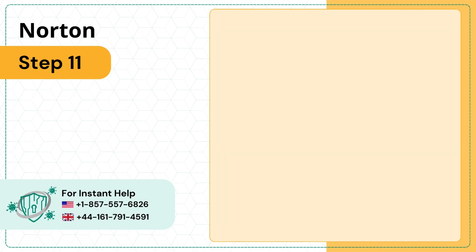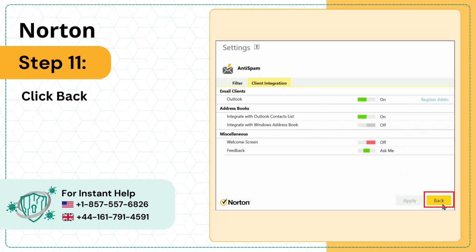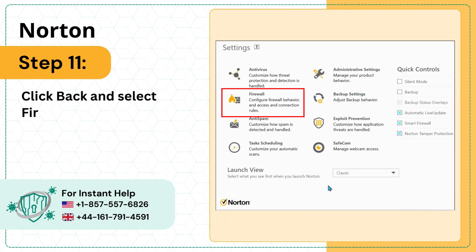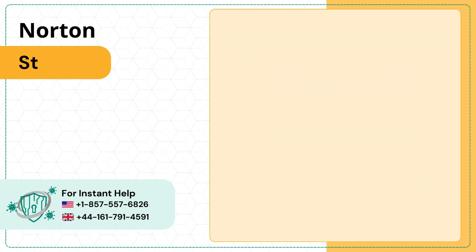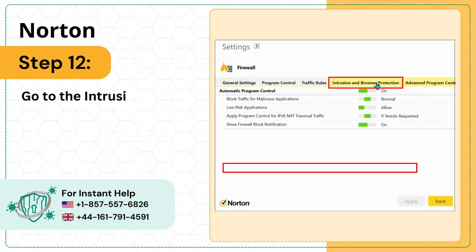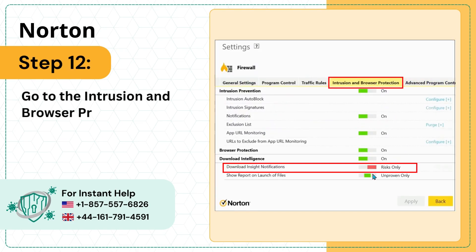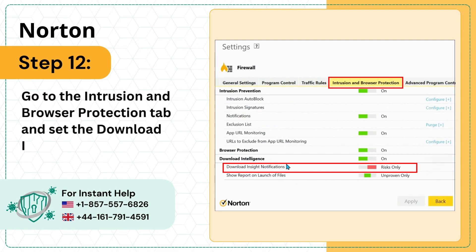Step 11: Click Back and select Firewall. Step 12: Go to the Intrusion and Browser Protection tab and set the Download Insight Notifications to Risks Only.